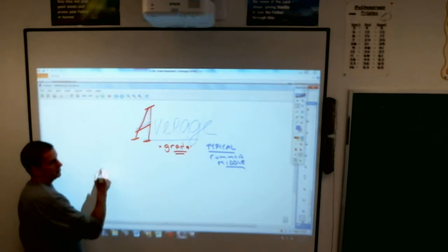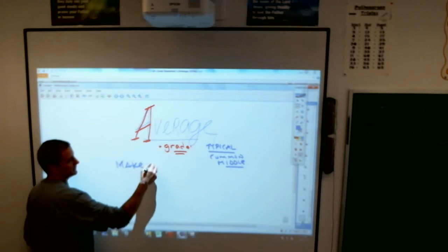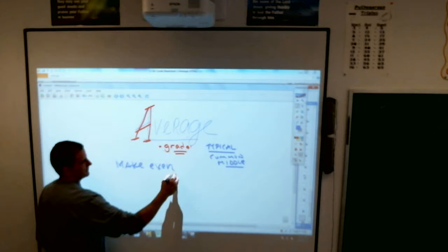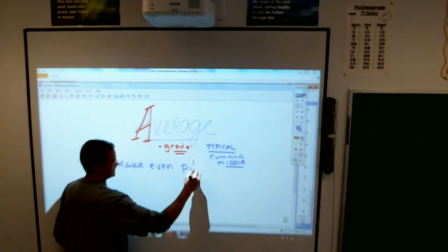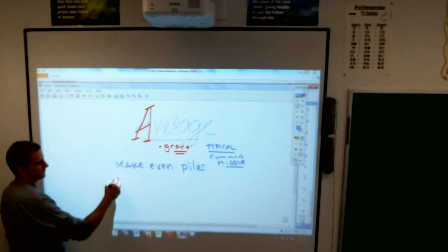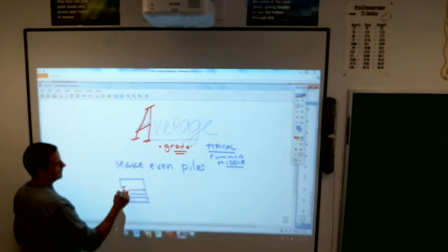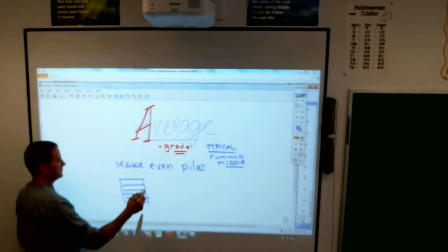Sometimes we use average to make even piles. Because that's how the book throws some of the stuff out of there, too. For example, you can draw this down. If you have one, two, three, four, five books in this pile.